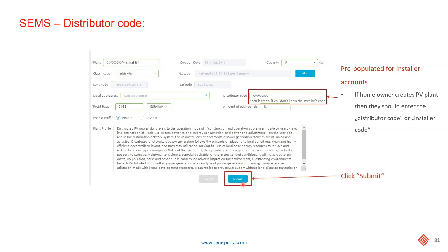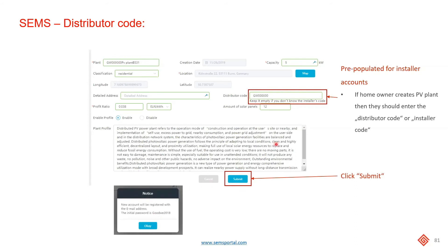Once you've finished, click submit and that will have created the PV plant. For any new accounts — if the end user or the owner has not yet created a SEMS portal account — we will create an account for them based on the email you entered, with the initial password as goodweek2018. They can log into the SEMS portal using this initial password, then they'll be asked to change it and will be able to see their PV plant that you've set up for them.